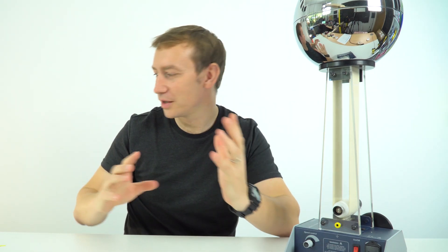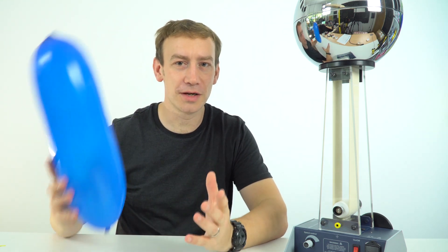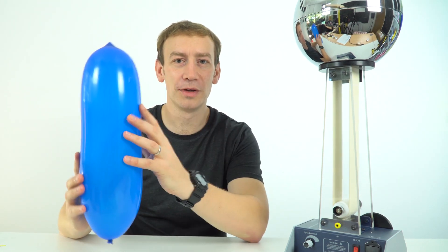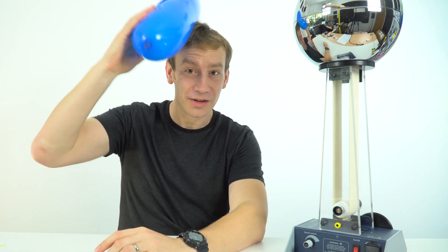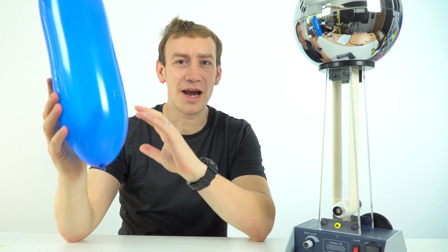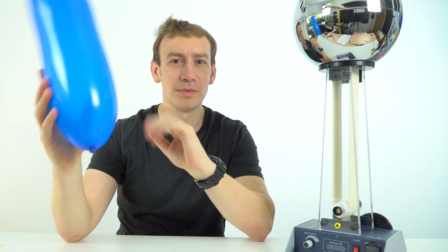Now when it comes to static electricity, all we're really doing is we're taking two insulators and we're rubbing them together. So it might be, for example, I take this balloon, I rub it on my hair, I charge it up, and then we have some static electricity as we've transferred some charges from my hair to the balloon.